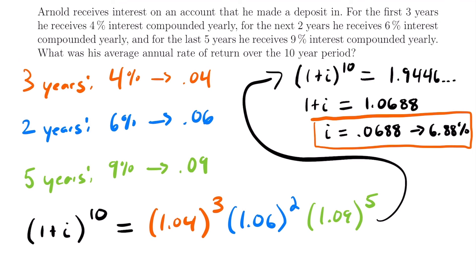Hopefully that made sense. The process of finding the average annual rate of return is really not too difficult — it's more about figuring out what your rates are and how to set them up in the equation, which is pretty intuitive once you see it. Those are all the examples I had. If you still have questions, feel free to leave them in the comments. I'll see you next time.